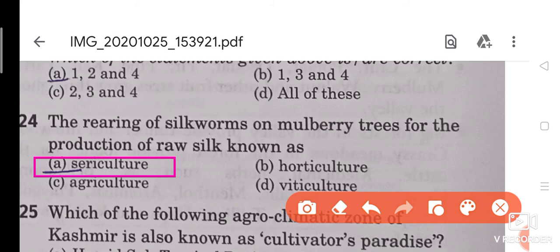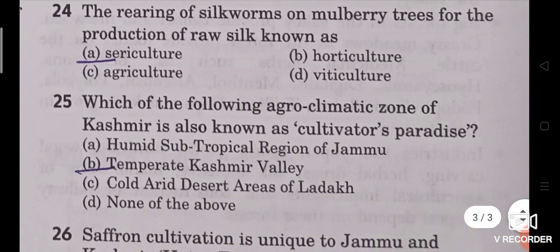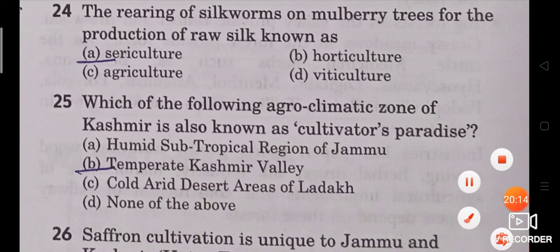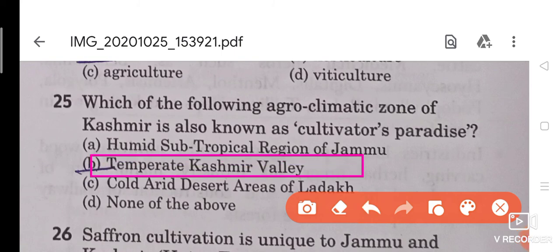Question 25: Which of the following agro-climatic zones of Kashmir is also known as the cultivator's paradise? The answer is the temperate Kashmir Valley. The temperate zone of the Kashmir Valley is also known as the cultivator's paradise.